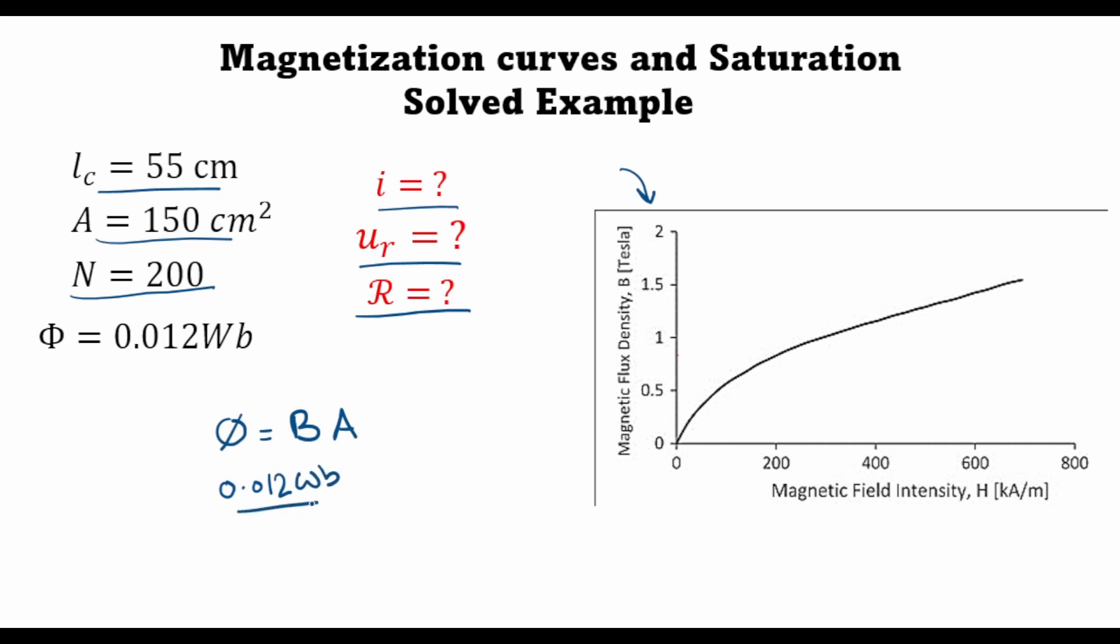So if I divide it by the area, I will convert the area from centimeter square to meter square, and this will give me the flux density as 0.8 tesla.